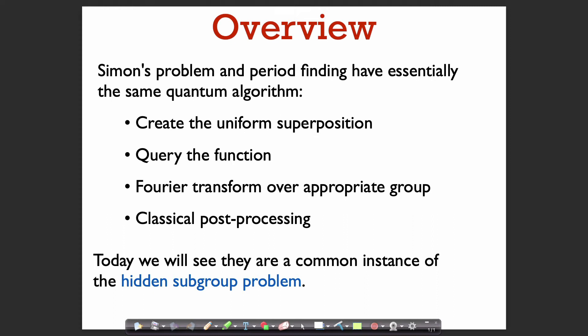In previous lectures, we've already seen the quantum algorithm for Simon's problem and the algorithm for the simple version of the period-finding problem. Both of these used essentially exactly the same quantum algorithm: first we created the uniform superposition, then we queried the function, and then we did a Fourier transform over the appropriate group.